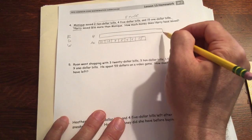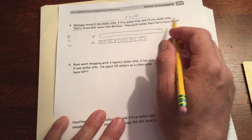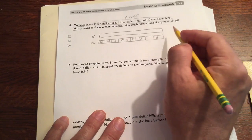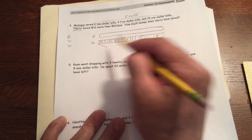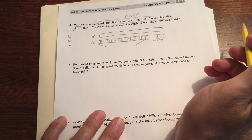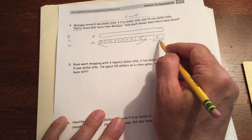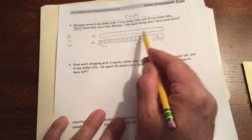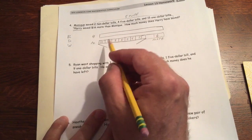And Harry has $16 more. So that's the same. So this would be $16 more. And I know that that would be the $16 more. Right? That's the more. So I have to figure out what this is, and then add it to the $16 more. And I'll have it figured out how much Harry has saved.